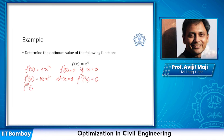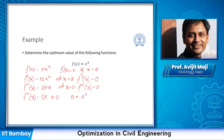Looking into the third order derivative, we get 24x, and at x = 0 the third order derivative is also equal to zero — still we cannot decide, we need a non-zero value. The fourth order derivative is 24, which is a non-zero value. The derivative order is four, which is even, and the value is positive, so we are going to get a minimum.